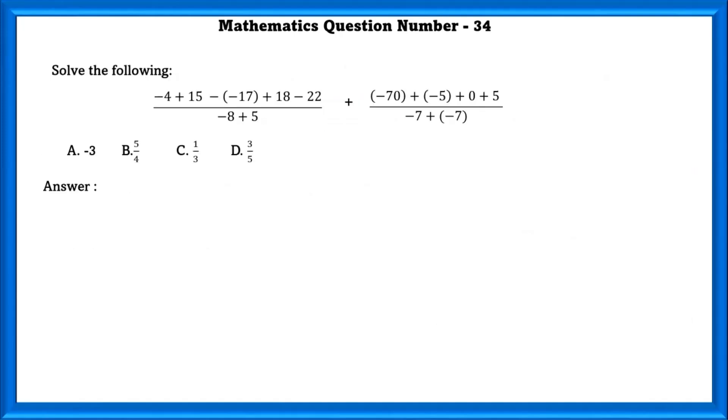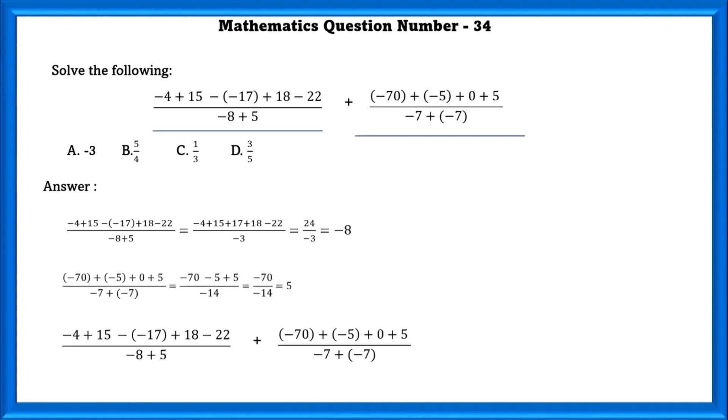Mathematics question number 34. Solve the following. First we can solve the left side term and then the right side term. Then we can add it. So solving the left side term, we can get the value as minus 8. Then solving the right side term, we can get the value as 5. So adding these two, we will get the value as minus 3.